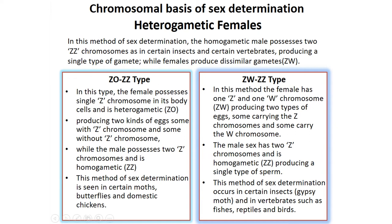The first type is ZO/ZZ. In this type, the female possesses a single Z chromosome in its body cells and is heterogametic, producing two kinds of eggs — some with a Z chromosome and some without. The male possesses two Z chromosomes and is homogametic, producing only one type of sperm. This method of sex determination is seen in certain moths, butterflies, and domestic chickens.